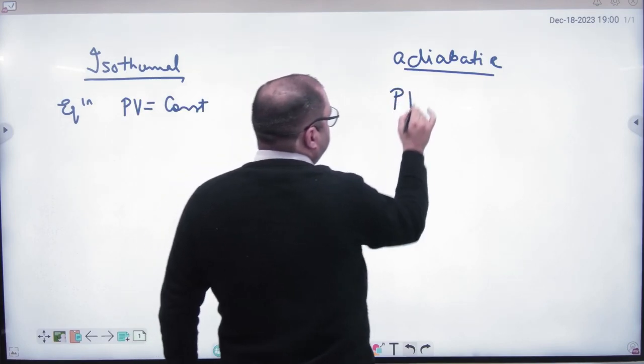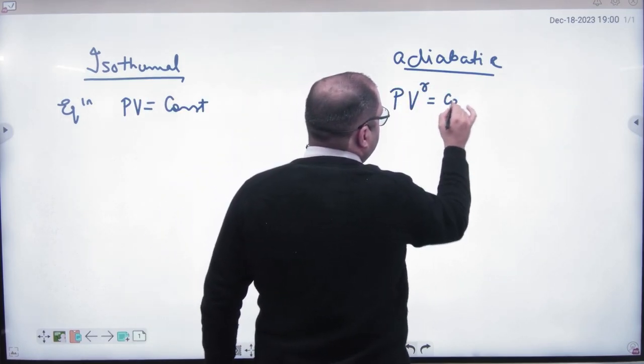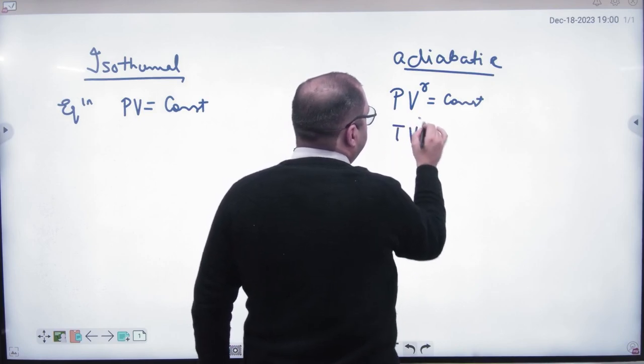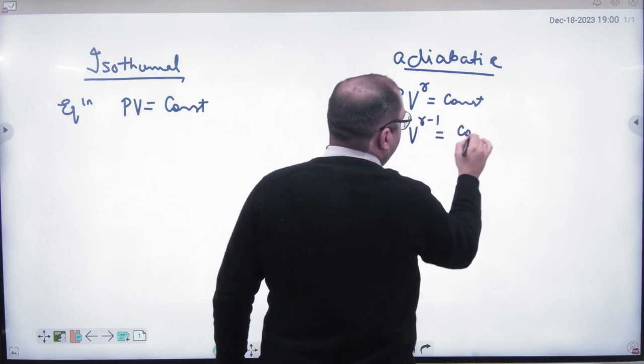Adiabatic equation is PV raised to power gamma is a constant, or PV raised to power gamma minus 1 is a constant.